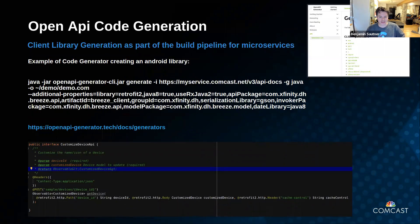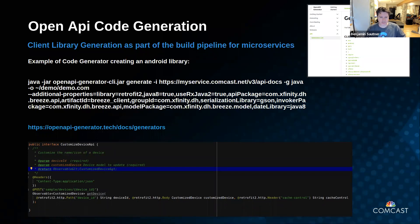This is a quick example of code generation. The open API code generator is a highly supported open source project that can generate client code in just about any language. We're using the Java generator, generating Java client code with RxJava observables within our Retrofit interfaces. The Kotlin generator is still a little green — it's open source, so everyone is encouraged to improve it — but once it does what we need, we'll be ready to use it.